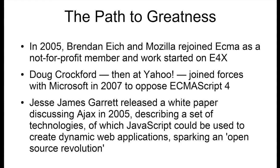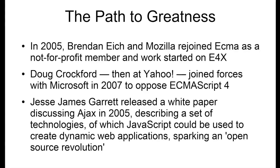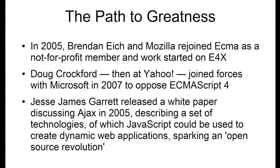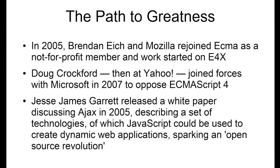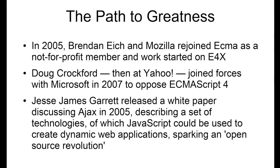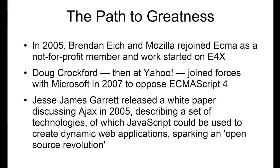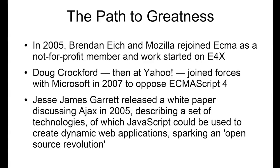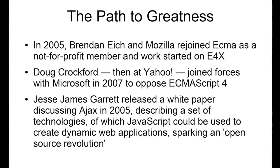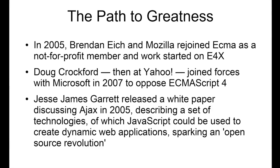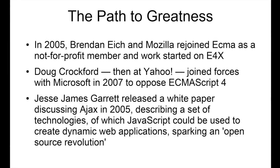While all this was happening, the open source developer community set to work to revolutionize what could be done with JavaScript. This effort was sparked by Jesse James Garrett in 2005, who released a paper discussing AJAX, which stands for Asynchronous JavaScript and XML. This described a set of technologies in which JavaScript was the cornerstone, used to create web applications where data could be loaded in the background, avoiding the need for reloading the page and resulting in more dynamic applications.